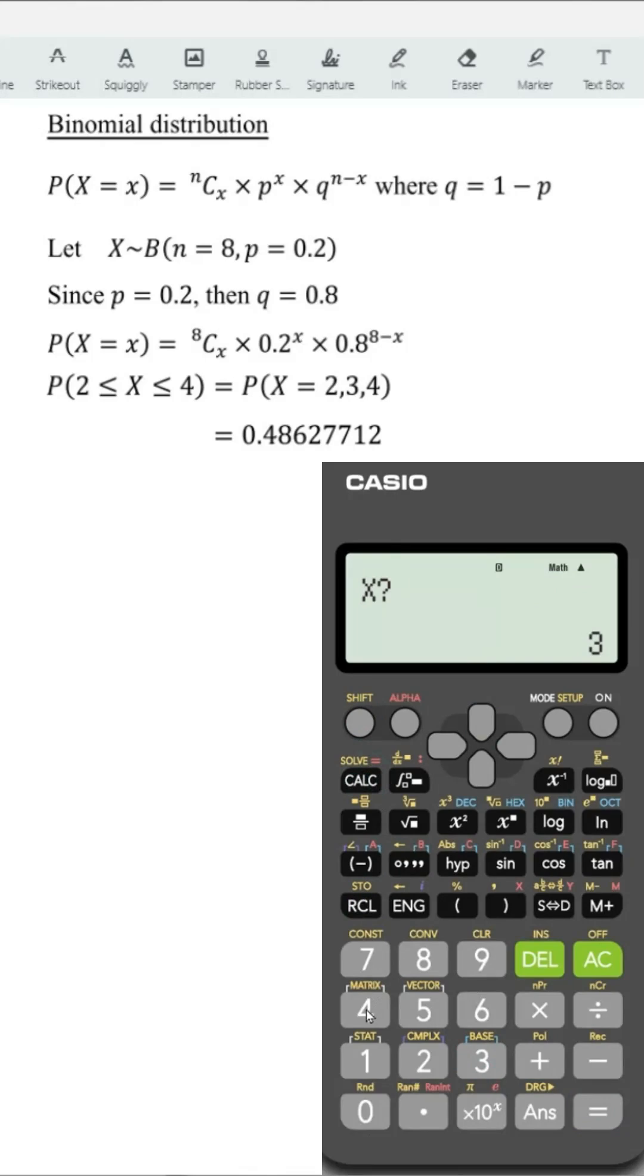Up, calculate when x equal to 4. Press equal, shift, recall store to C.